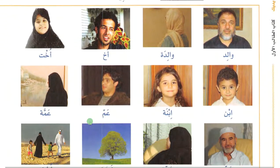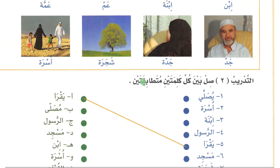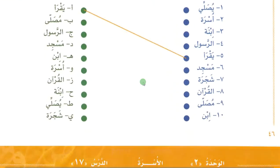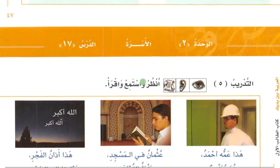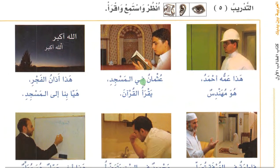القراءة — reading section. Just write the meanings as your homework. You can skip the joining exercise and the next two questions. Then he is asking you to look, listen, and read. This is his uncle Ahmad, he is an engineer. عثمان في المسجد يقرأ القرآن — Usman is in the masjid reading the Quran. This is the Azan Al-Fajr. Let's go to the masjid.